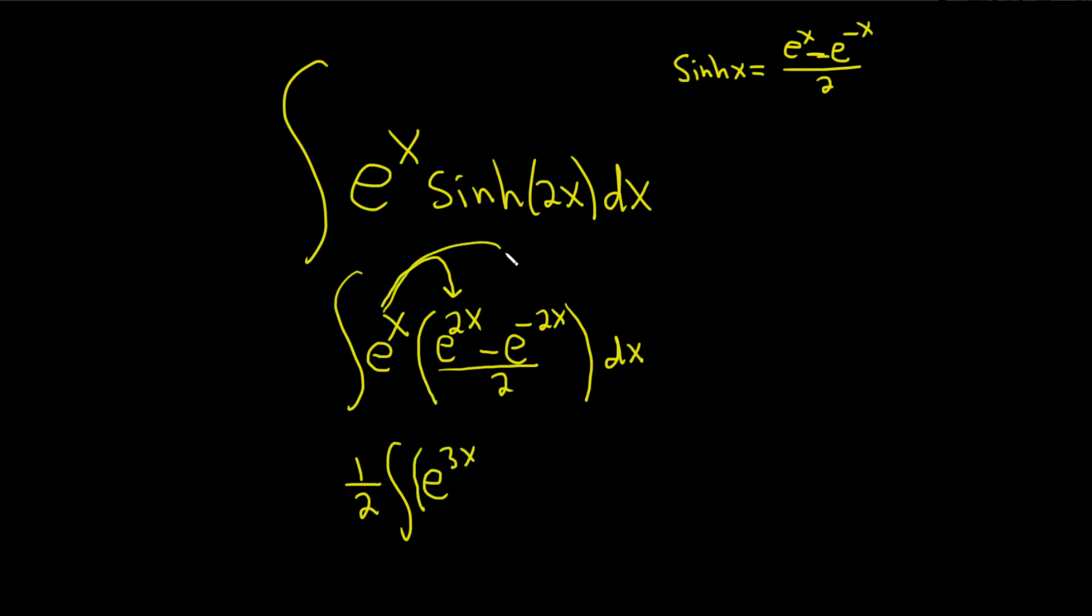So that's going to give us e to the 3x. Then same thing here, this times this. So you have minus, adding the exponents, x minus 2x is negative x. Beautiful stuff, dx.